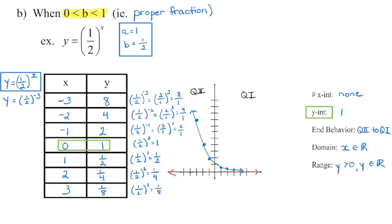Similar to what we did previously, I can choose any values for x, substitute into the function, and generate a y-coordinate. I kept with negative 3, negative 2, negative 1, and so on. If I substitute negative 3 for x, remember to get rid of a negative exponent we reciprocate the base — flip it. 2 to the power of 3 is 8, 1 to the power of 3 is 1, and the exponent applies to both numerator and denominator. When x is negative 3, y is 8 — plot that point.